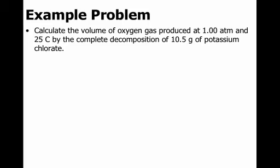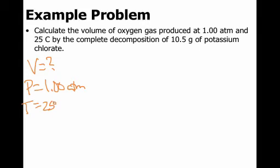This one says calculate the volume - I'm going to start by making my list. Volume of oxygen produced at a pressure of 1 atm and 25 degrees Celsius by the complete decomposition of 10.5 grams of potassium chlorate. Now notice the difference: it says calculate the volume of oxygen, but they give us grams of potassium chlorate. So we can't convert that to moles and use that in the equation because that's not what we're trying to find here. We need moles of O2. So we're going to have to set up our reaction and do a little bit of stoichiometry.